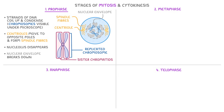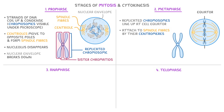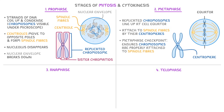Note that a human cell would actually have 46 chromosomes at this point — only three are shown here for simplicity. The following stage is metaphase, where the replicated chromosomes line up at the cell equator, the middle line of the cell. They attach to the spindle fibers by their centromeres — the part of the chromosome that links the two sister chromatids. At this point there's a crucial checkpoint called the metaphase checkpoint, which ensures all chromosomes are properly attached to the spindle fibers before the cell moves on.